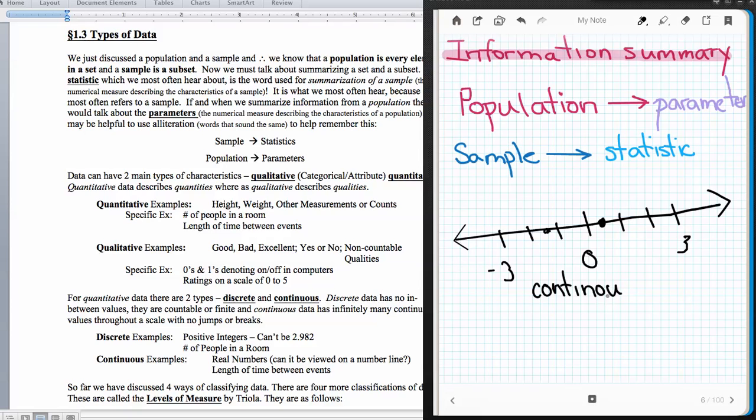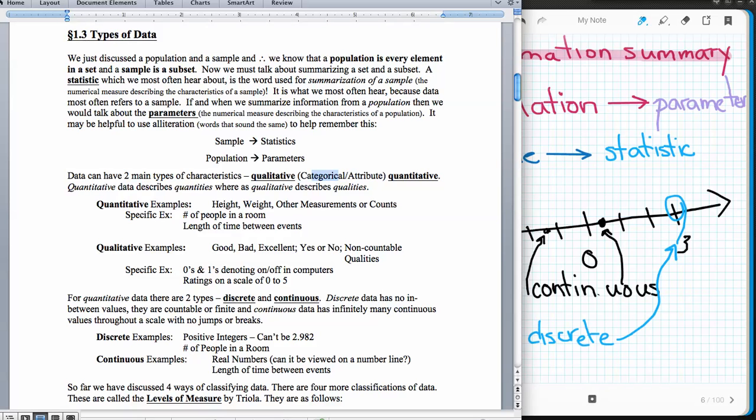Those are what we would call continuous. The idea of continuous is all of the breakdown in between what we would call an integer on the number line. We have continuous, which have these in-betweens, and then we have the discrete data, the stuff that we talk about in terms of whole numbers, integers, or natural numbers. Discrete examples: positive integers that can't be 2.982. The number of people in the room are an example. There's not 1.5 people in the room, there's either one or two people.